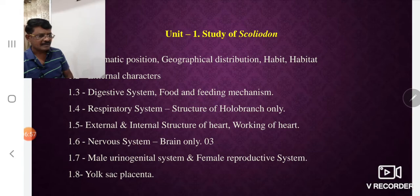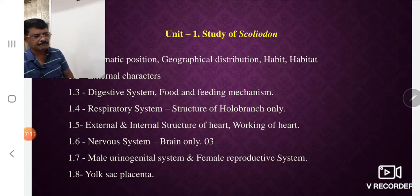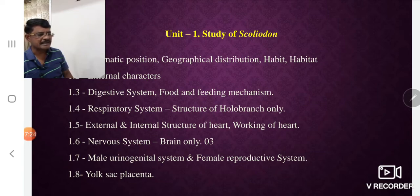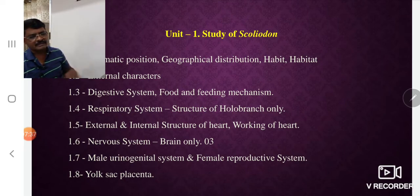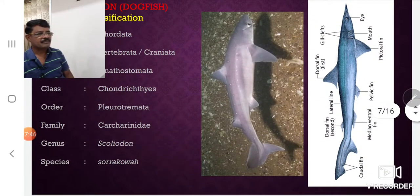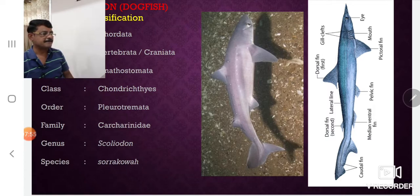Further content includes the external and internal structure of the heart, the mechanism of the heart, the nervous system — specifically the dorsal and ventral views of the brain including the central nervous system — the male and female reproductive system along with the urinogenital system, and the coelom and placenta related to development. The classification of Scoliodon is presented here, and the figure shows a view of Scoliodon.